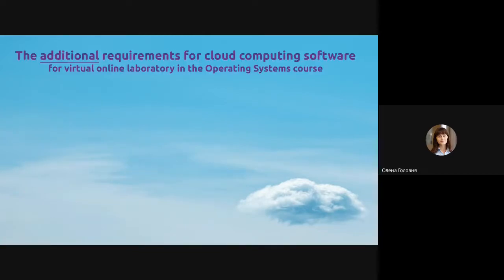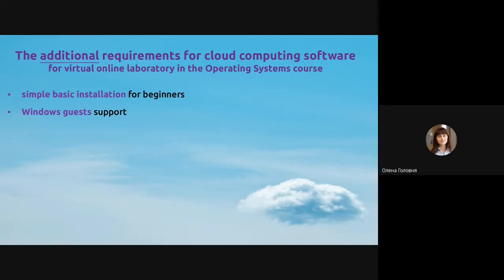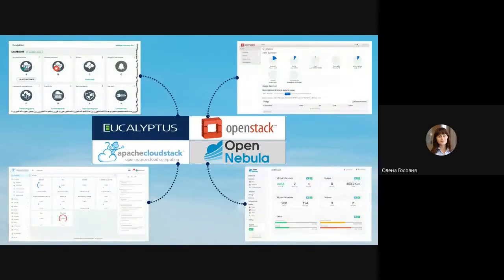There are also additional requirements: these tools should serve as a platform for students' extracurricular and independent work even during early stages of implementation. It should have a basic installation variant for beginners, and it would also be desirable to have Windows guest support. We analyzed four popular cloud computing software platforms available under free and open source licenses: Eucalyptus, OpenStack, CloudStack, and OpenNebula.